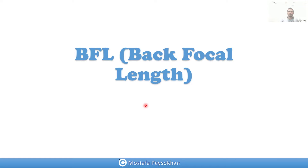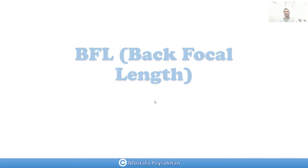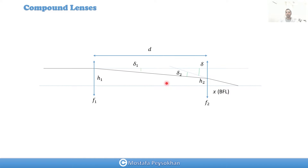In previous videos we talked about the compound focal lengths of two lenses. Now we want to talk about the back focal length — how we can calculate it and prove the equation for it. Let's say we have two lenses f1 and f2 at distance d. This distance x that we label is called the back focal length, which is the distance from the second lens to the focal point of the whole optical system.